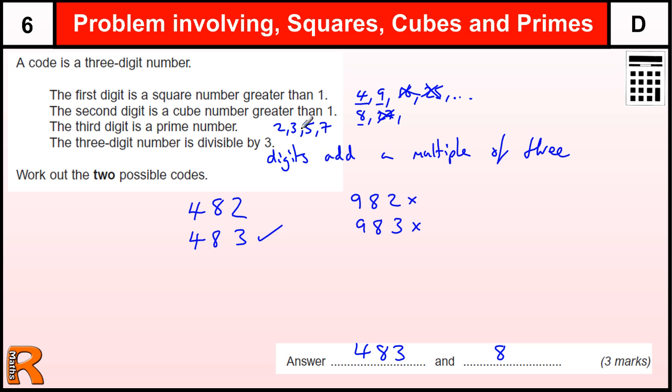Ideally we want a 4 there, but that's not going to work. So let's try the 5. That's going to be 22, so that's not a multiple of 3.